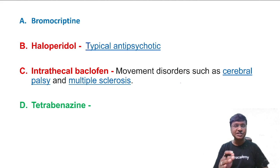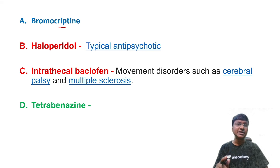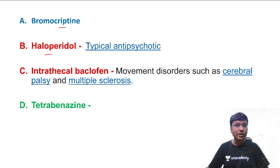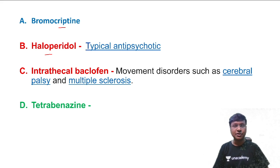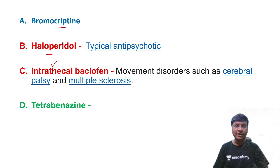Reviewing the drug options: bromocriptine is a dopamine agonist used in the treatment of prolactinoma. Haloperidol is a typical anti-psychotic used in the treatment of schizophrenia and is also an anti-dopaminergic drug.